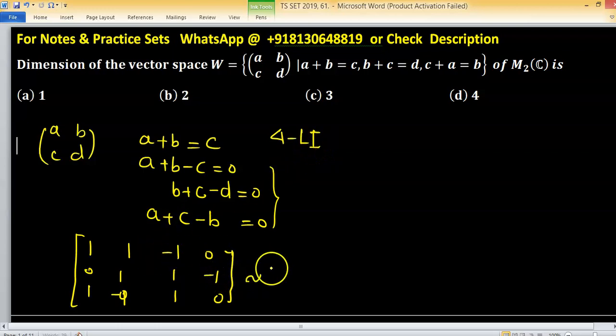Apply elementary row operation to this matrix. First row, there is no change. Second row: zero, one, one, minus one. And third row: zero, minus two, two, and then zero.